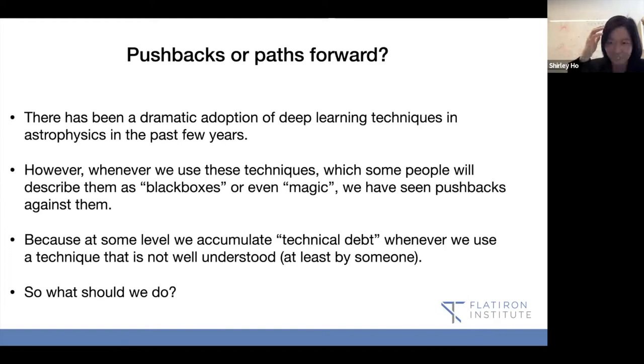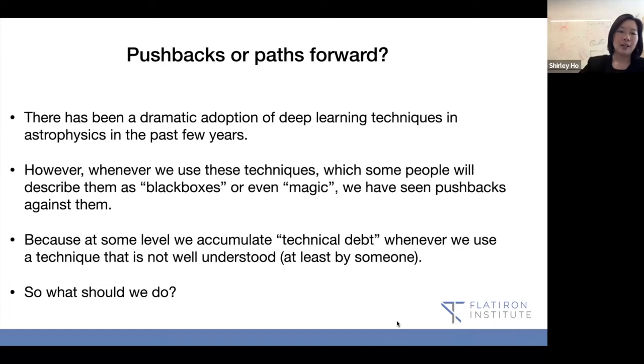But this brings back to an interesting point. We've been seeing this dramatic adoption of deep learning techniques in astrophysics in the past few years, which I'm very happy to see. But when we use these techniques, a lot of people describe them as black boxes. One of my collaborators used the word magic the other day. We've seen a lot of pushbacks against them. Because at some level, we accumulate these technical debts.